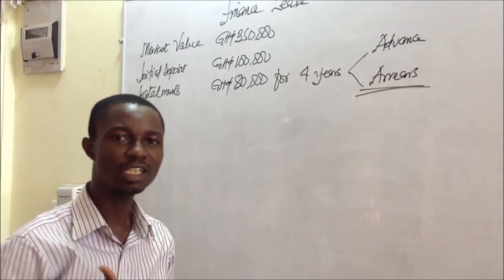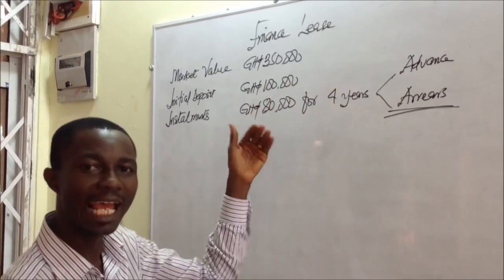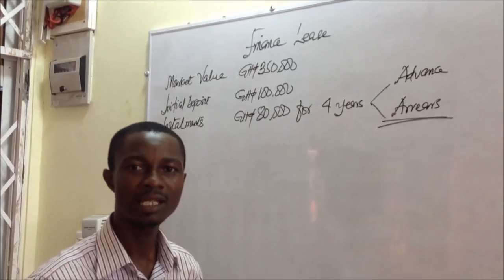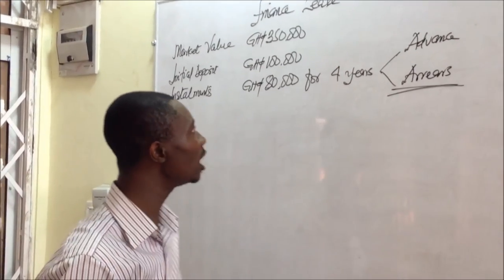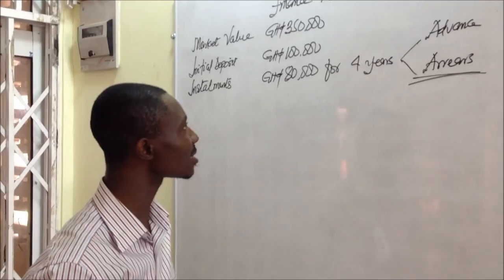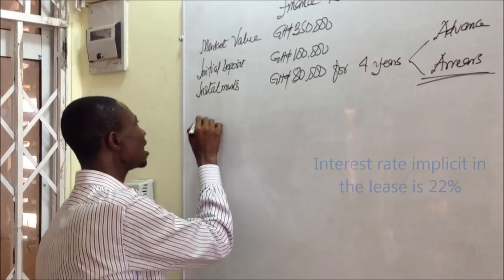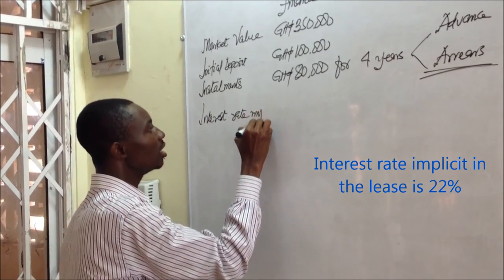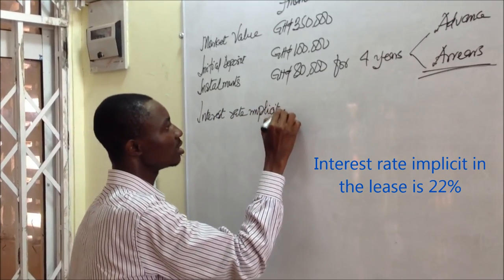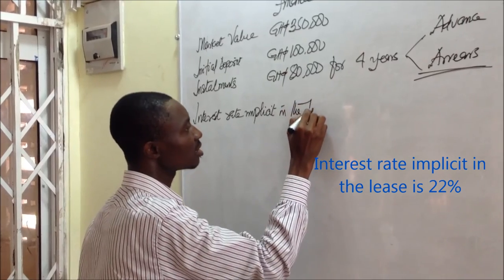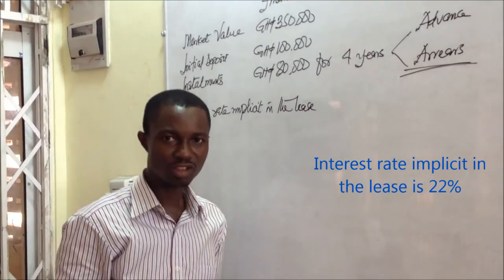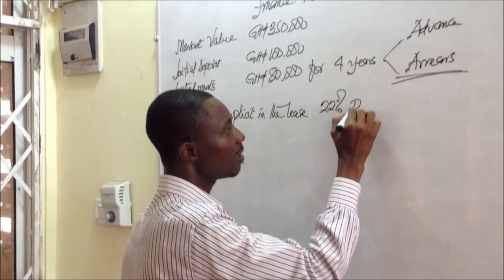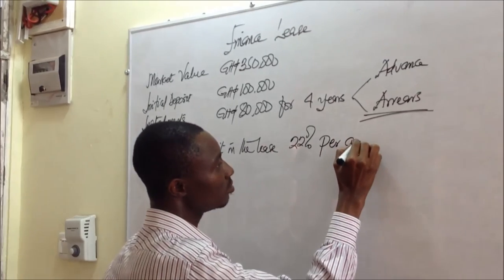So we make an initial deposit of $100,000, then at the end of every relevant year for the next four years, we are going to pay $80,000. What is the interest rate implicit in the lease? Assuming that it is given as 22% per annum.